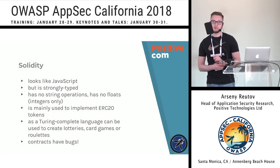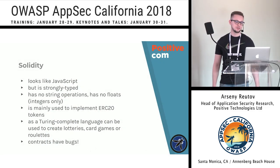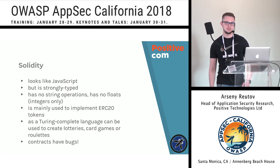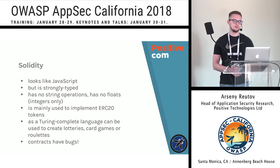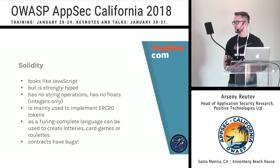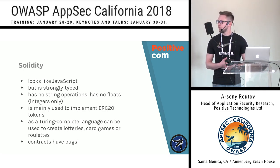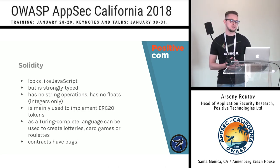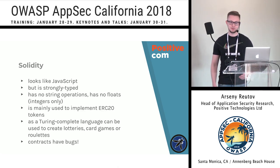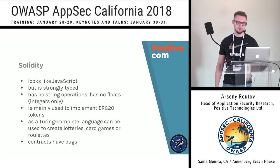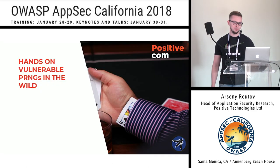Solidity is the most popular language to write smart contracts. It looks like JavaScript but is strongly typed, has no string operations, and has no floats. It is mainly used to run ICOs and to make ERC-20 compatible tokens. Solidity is Turing complete. Solidity smart contracts have bugs, especially in lotteries and card games, because they have random number generators that I found to be vulnerable.